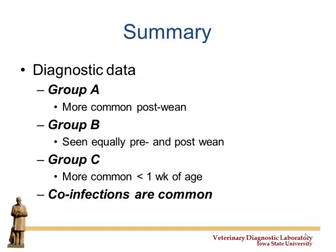The data summary: group A viruses are more common post-weaning. Group Bs we see mixed in. Cs are most common less than one week of age, and we do find co-infections quite frequently.